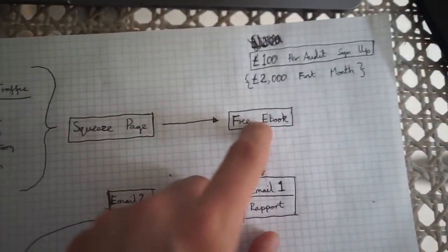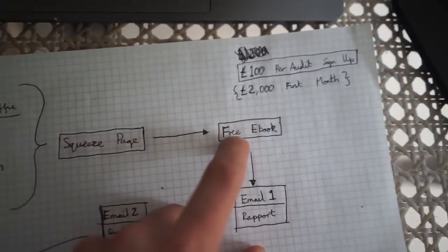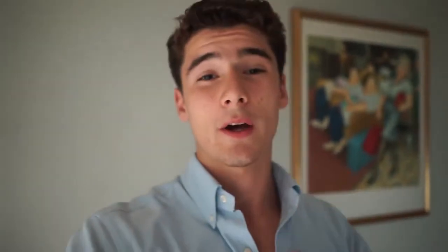Once they've gone through the squeeze page, they receive their free ebook via an automated email. They read the ebook, which builds rapport and puts me in a position of authority. Your free ebook really dictates how many conversions you get and how far you can bring people through the funnel, because it's their first point of contact with your business. This seven-to-eight page ebook — I'm very happy with how it came out.